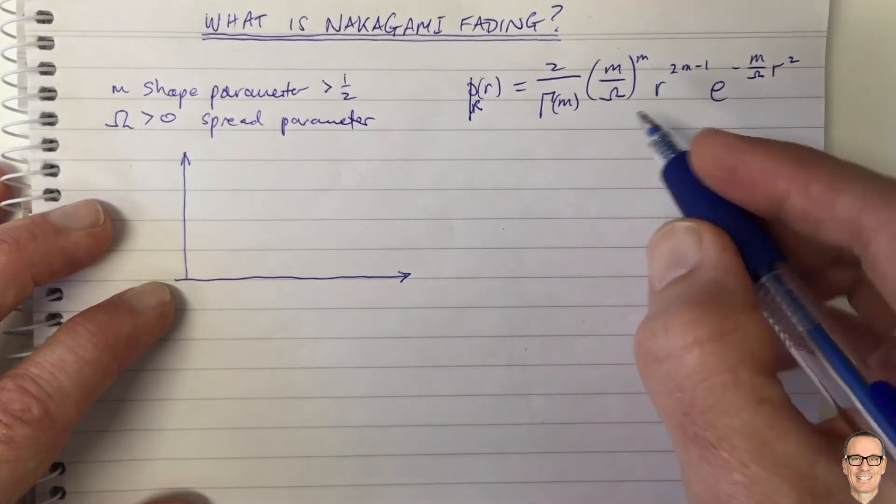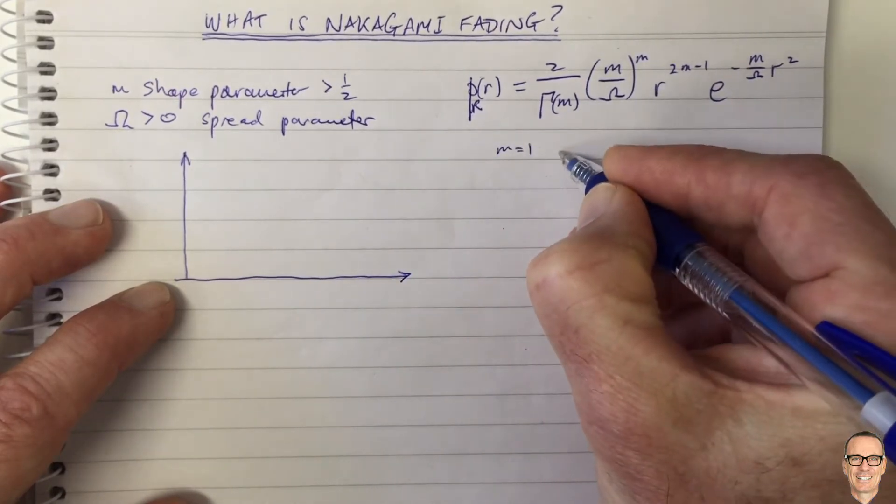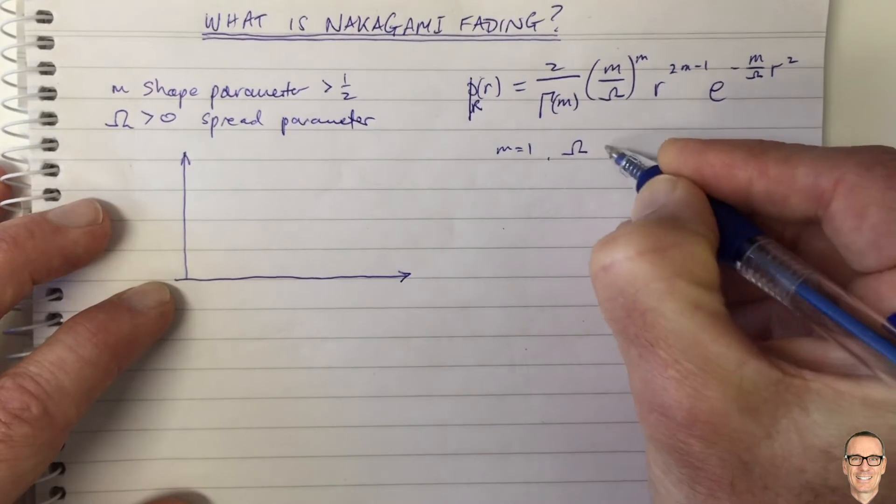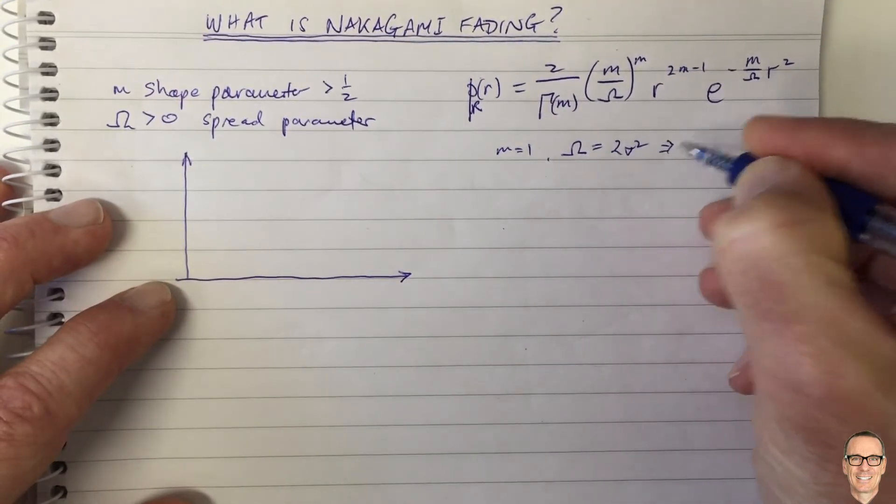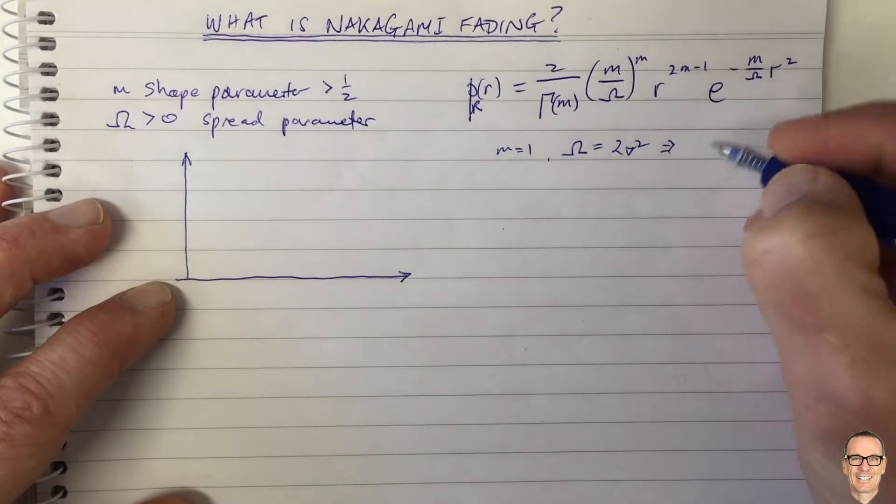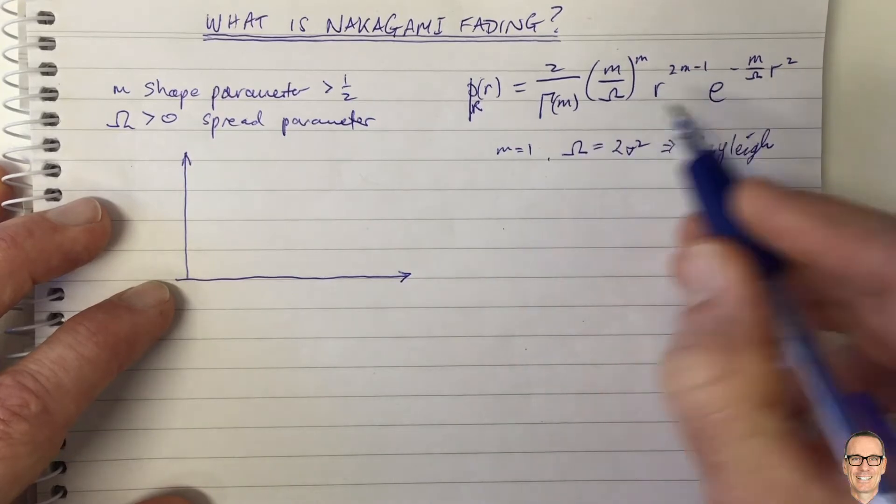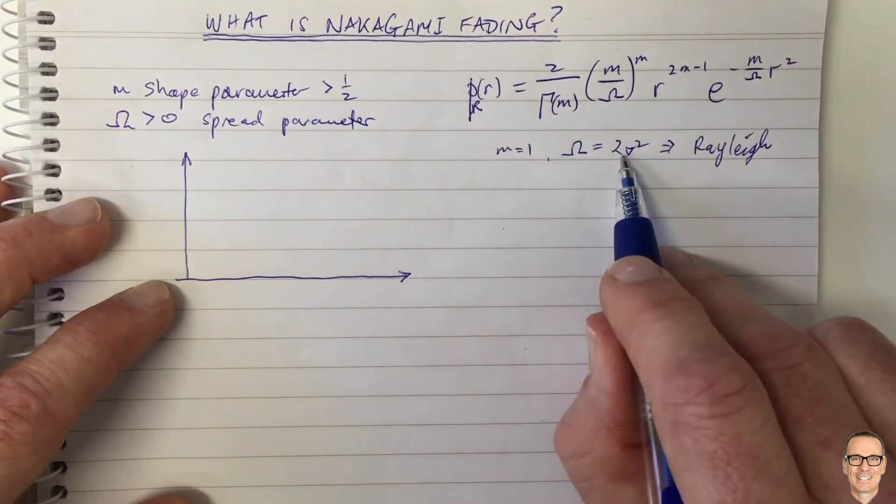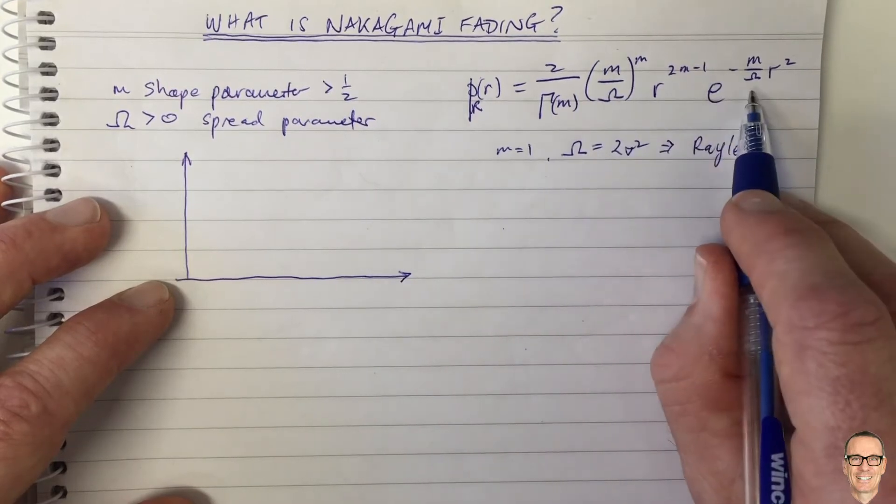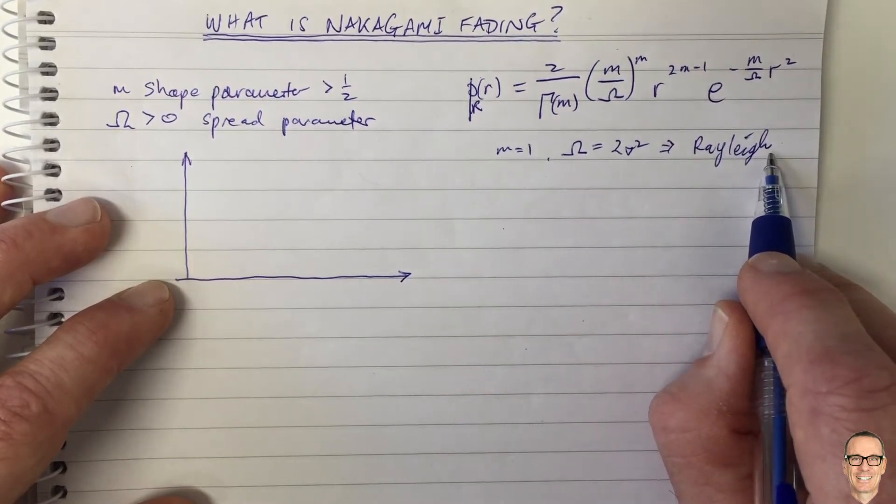Okay, so one thing to notice first of all is if M equals 1 and if omega equals 2 sigma squared, then this exactly becomes the formula for Rayleigh fading. So straight there, one of the cases from Nakagami, when you set these two parameters here, you can verify it for yourself, you actually get Rayleigh as a special case.